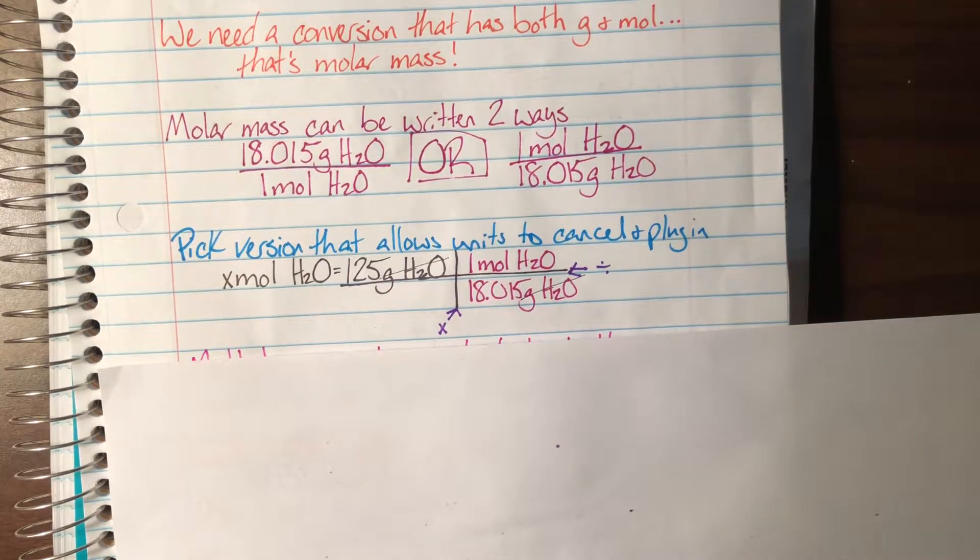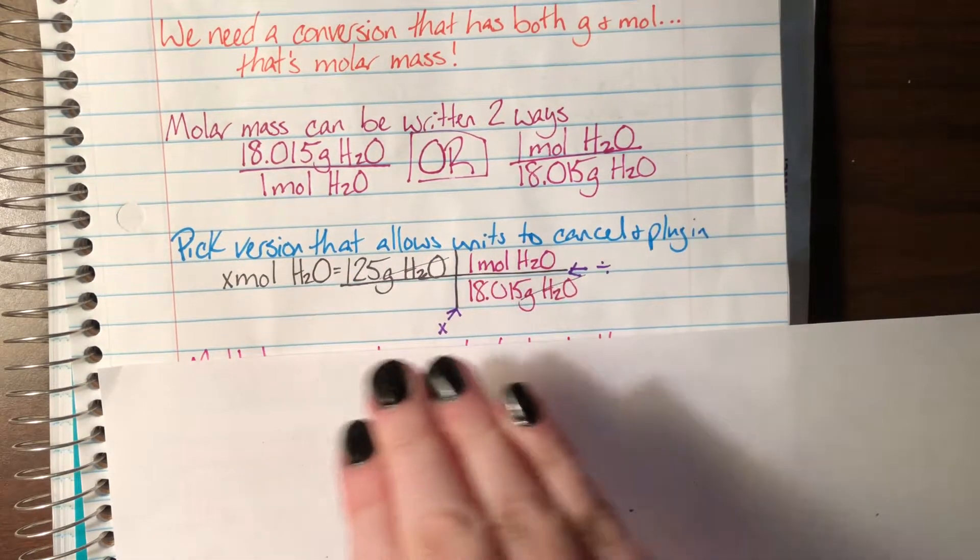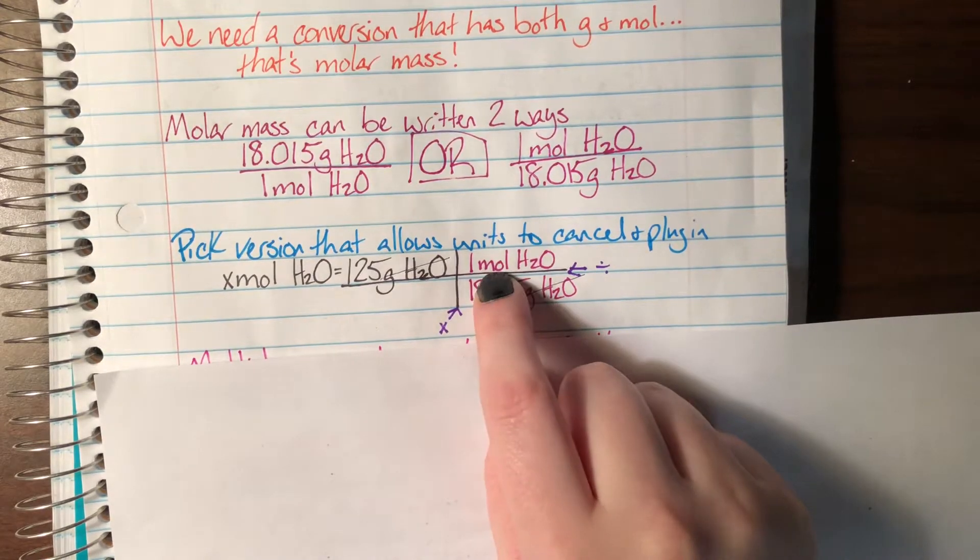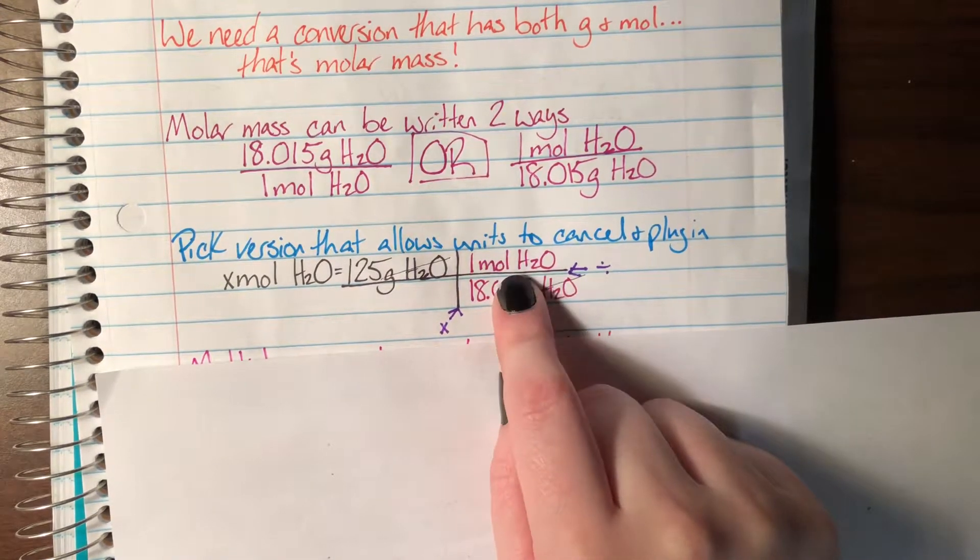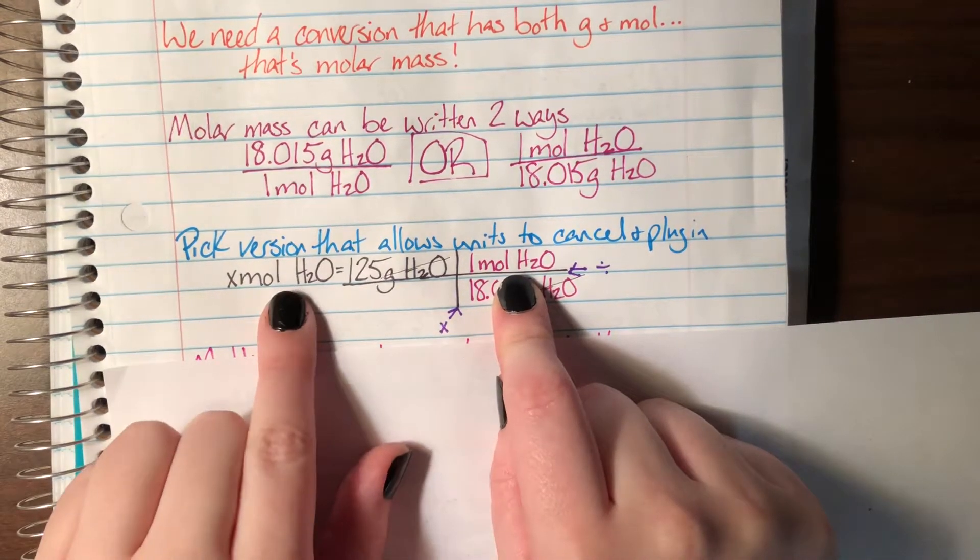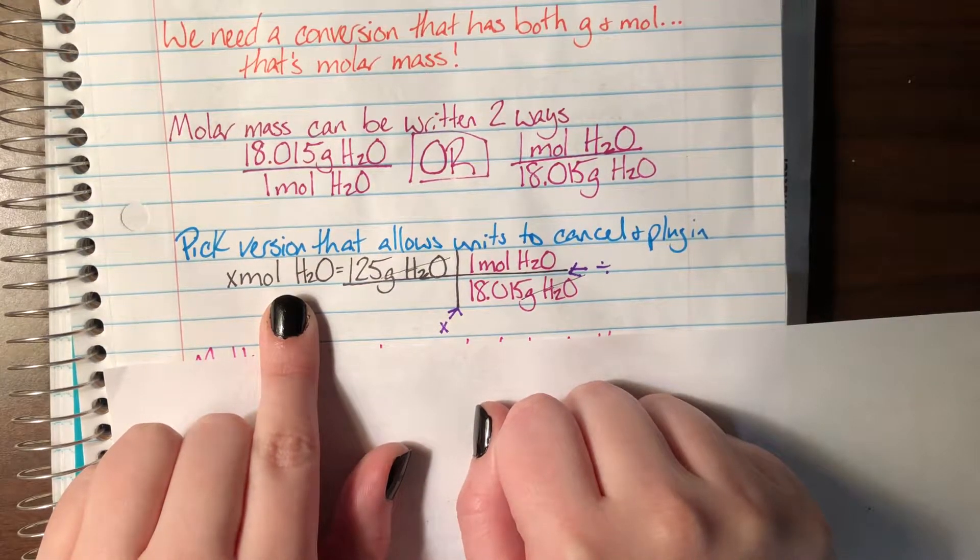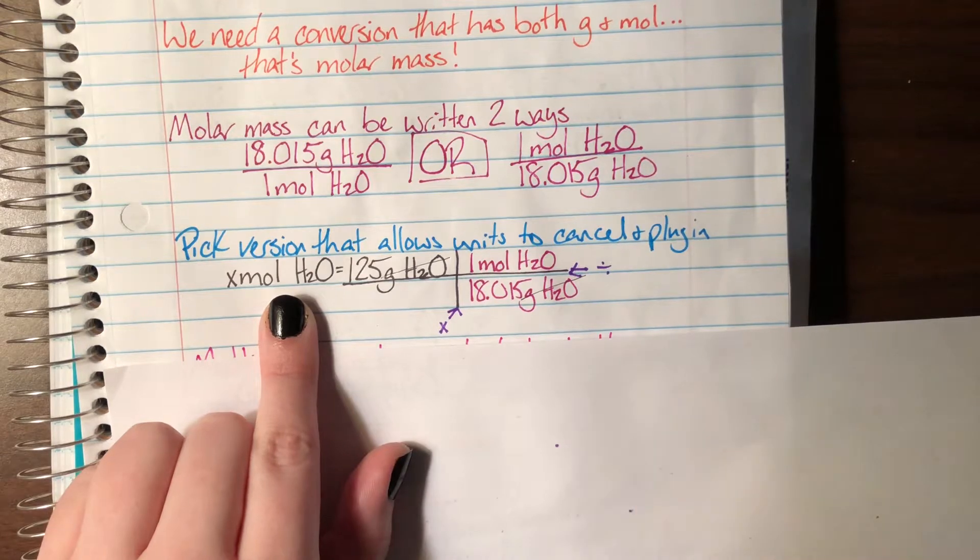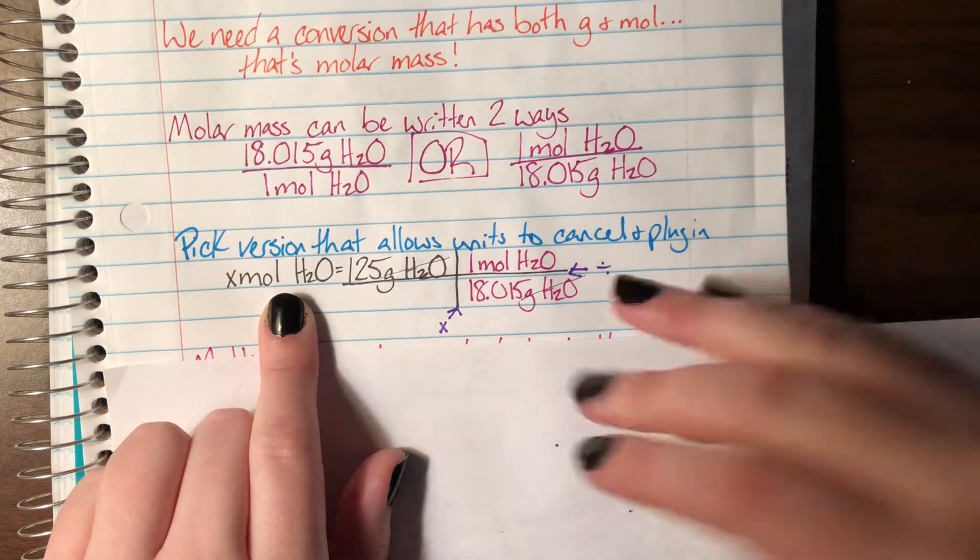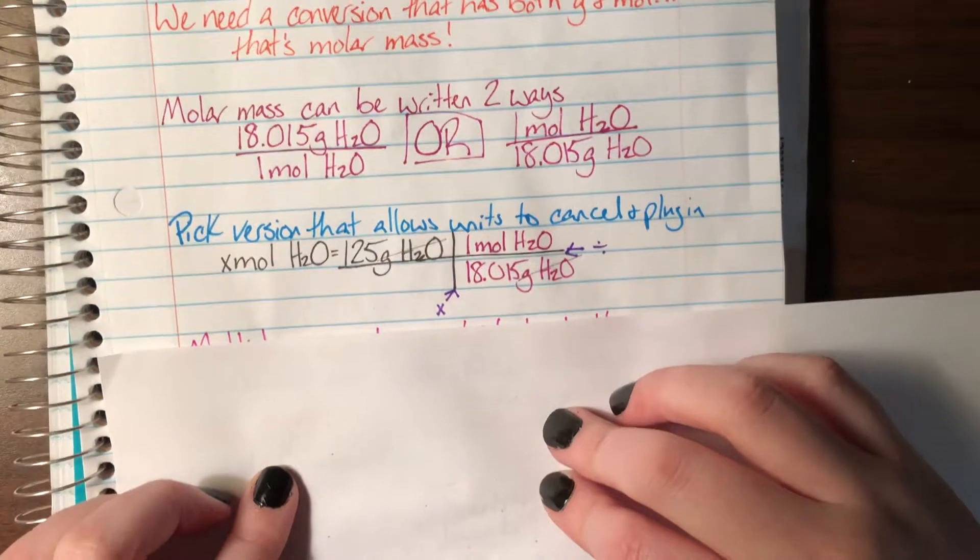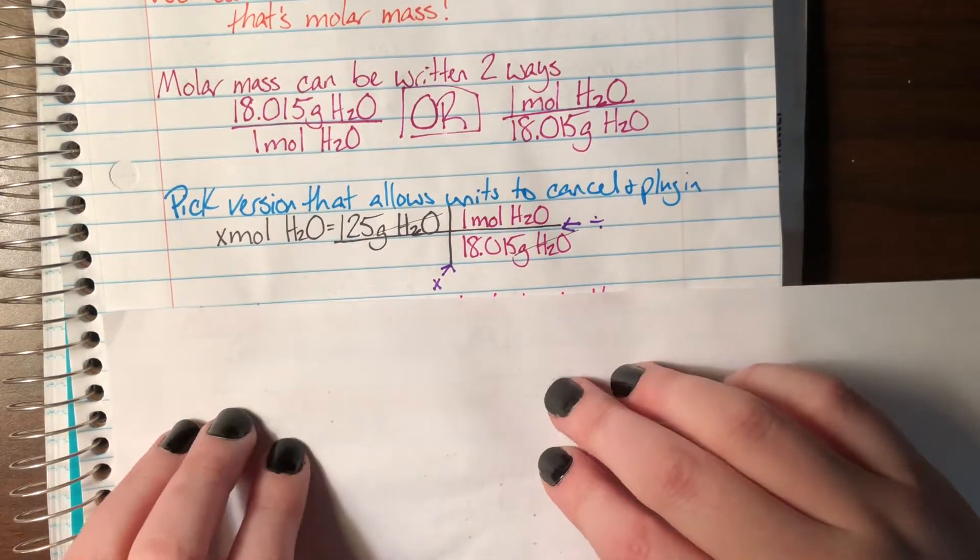The only thing that's left in the actual math, the only words that are left in the math, is moles of H2O, which we stated at the very beginning to be the unit that we were actually looking for. So I know that I have made it to the correct unit, and I can stop finding new conversion factors, and I can start actually plugging in and doing the math.